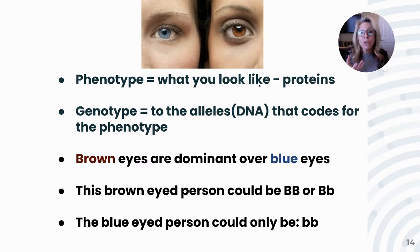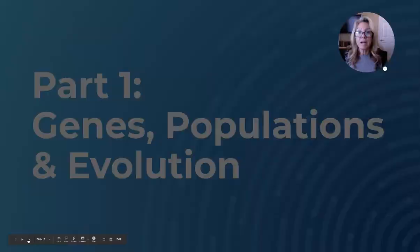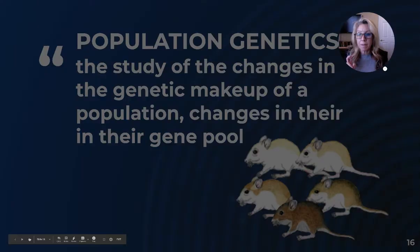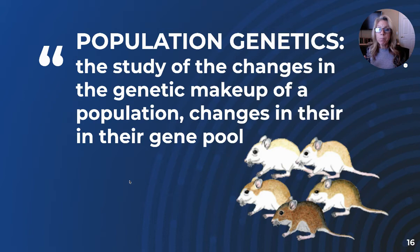We know the blue-eyed genotype because the only way to get blue eyes is homozygous recessive (bb), since blue eyes are a recessive trait. To get brown eyes, you could have Bb — heterozygous — or BB — homozygous dominant. Two different genotypes give the same phenotype. Population genetics is the study of changes in the genetic makeup of a population — changes in their gene pool. The gene pool is all the alleles in a population.